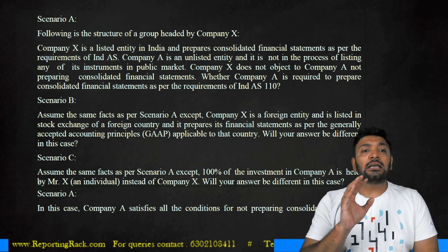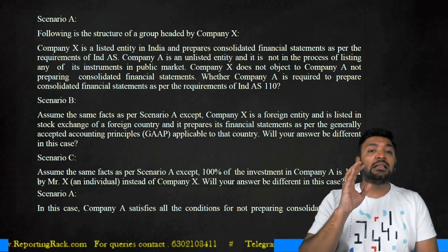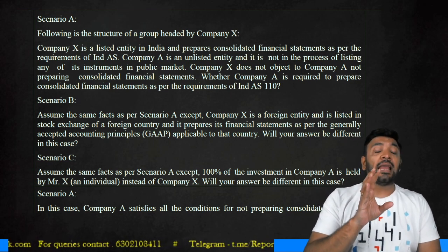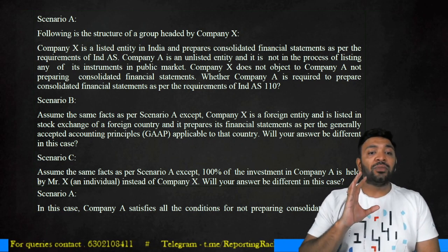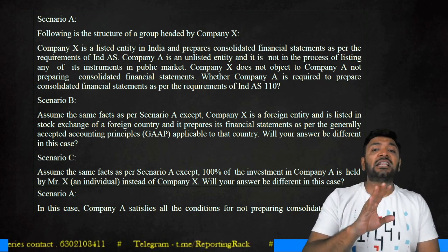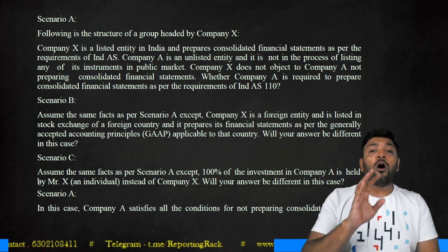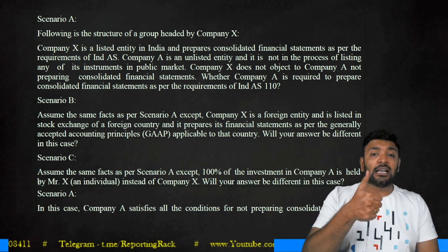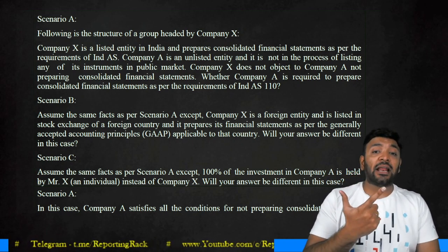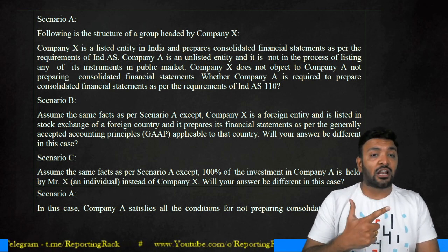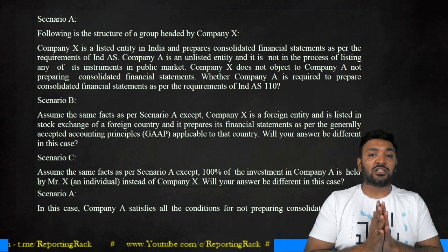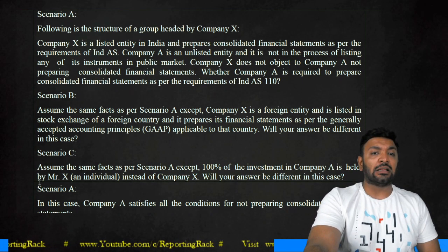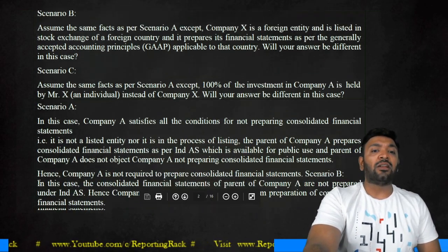Company X is basically holding the shares of Company A, and Company A probably also has another subsidiary. So Company A becomes an intermediary parent enterprise. For an intermediary parent enterprise, if the shares are not listed in any public market or in the process of listing, and the ultimate parent enterprise is already presenting financial statements on a consolidated basis, then you can claim exemption from consolidation. In Scenario A, yes, Company A has satisfied all the conditions and therefore it is exempted from consolidation.